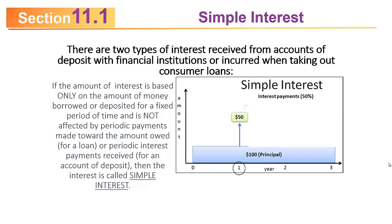Take a ridiculous example where you had 50% simple interest payments. If you start out with $100, after year one, 50% of 100 is 50, you'd get a $50 payment. After year two, you'd get a $50 payment. And after year three, you'd get a $50 payment. The simple interest idea is that the principal stays the same and you get a certain amount off of that each year.